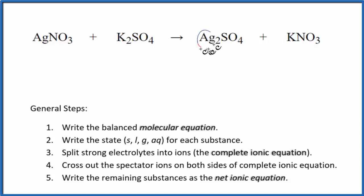I can see I have two silvers here and just one here. So I'm going to put a two here. Now I have two nitrates, two of these nitrates here and just one here. I'll put a two here. Now I have two potassiums and two here. So those are balanced and I only have one sulfate on each side. So that's the balanced equation, balanced molecular equation.